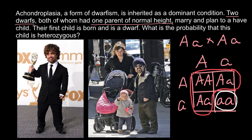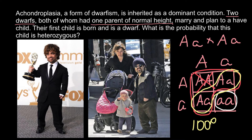Some of you may answer that if the child is a dwarf, the probability of being heterozygous would be two out of three. But this is not the correct answer, because the homozygous dominant genotype is a lethal condition. So if we know the child is a dwarf, we can say with 100% assurance that this child is heterozygous. Our answer is: we are 100% certain the child is heterozygous.